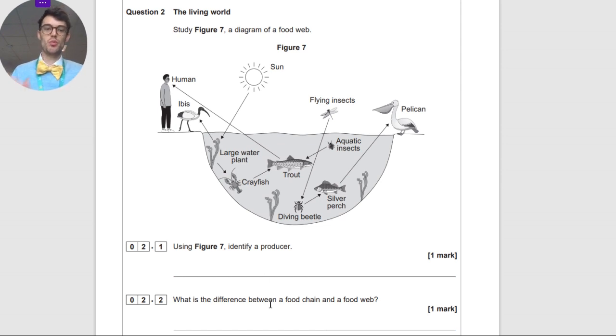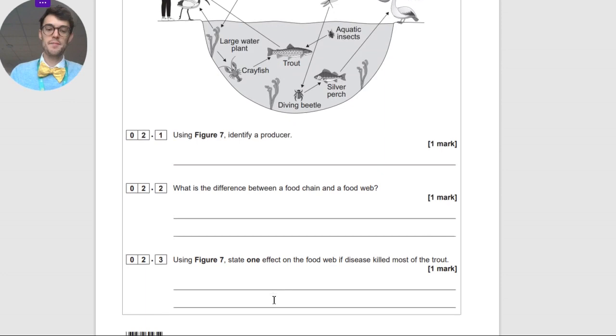What is the difference between a food chain and a food web? A food chain is a single line of trophic levels where you have a producer, a consumer, whereas a food web is interconnected food chains together that interlink.